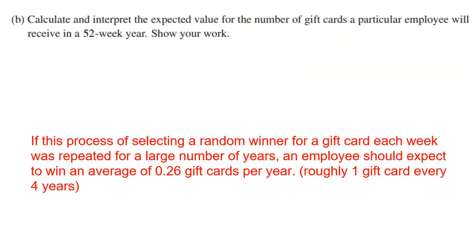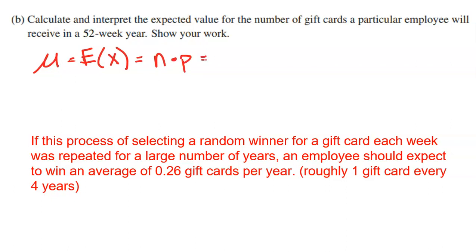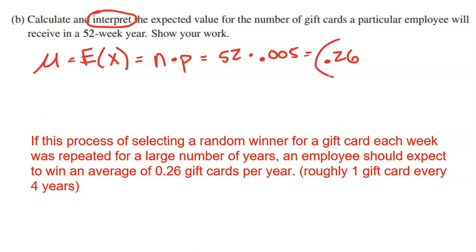Part B says: calculate and interpret the expected value for the number of gift cards a particular employee will receive in a 52-week year. Remember the formula for expected value — you can use mu or E(X). For a binomial distribution it's simply N times P: 52 times 0.005, which equals 0.26. But don't stop there — we also have to interpret it.